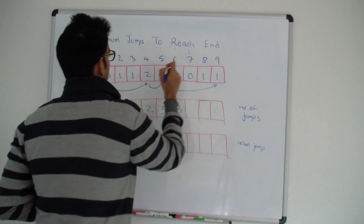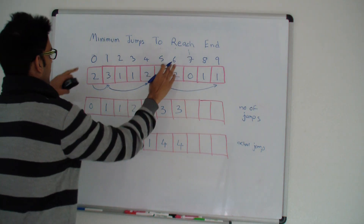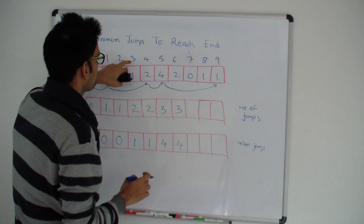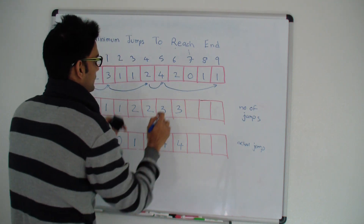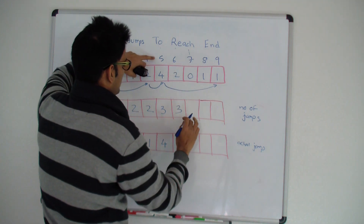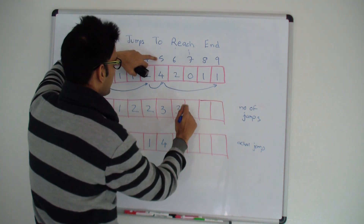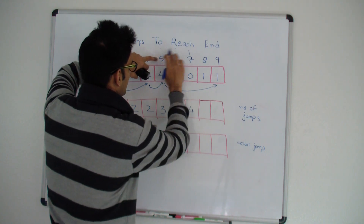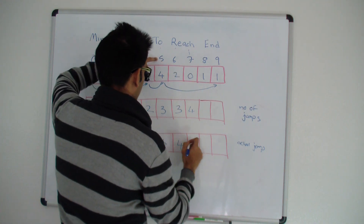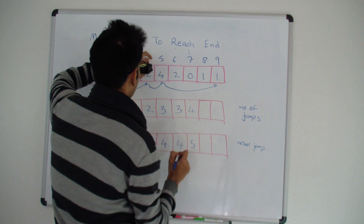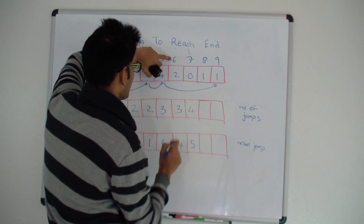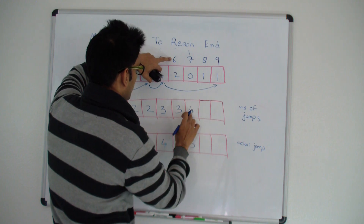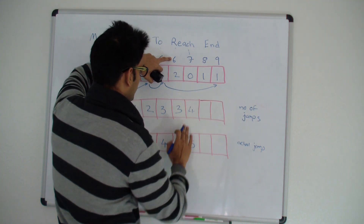Now i is seven. Can I reach seven from zero? No. From one? No. From two? No. From three? No. From four? No. From five? Yes. So the minimum number of jumps to reach seven is three (to reach five) plus one, which is four. We indicate reaching seven from five. From six we can also reach seven, but the minimum jumps would be three plus one, which is four — not better, so we don't touch it.